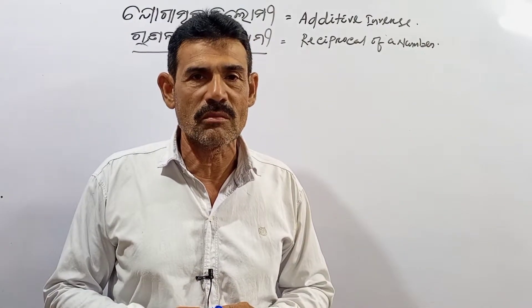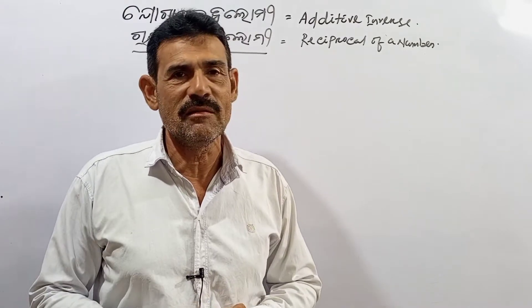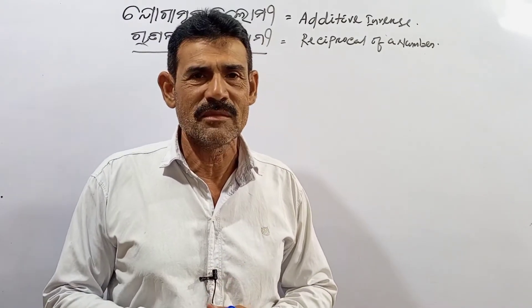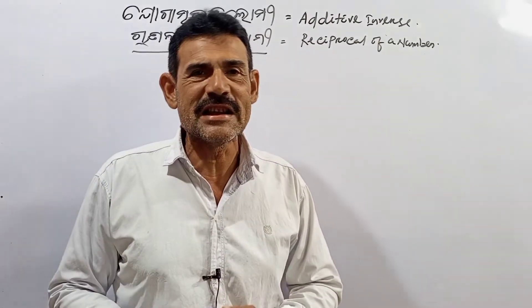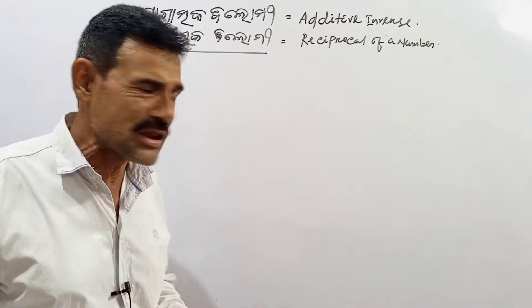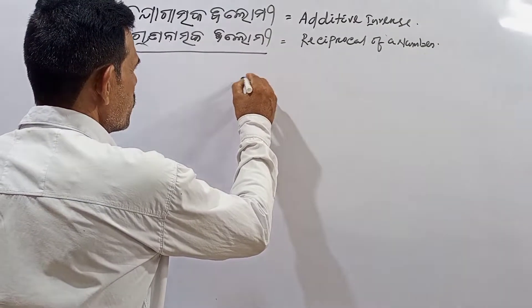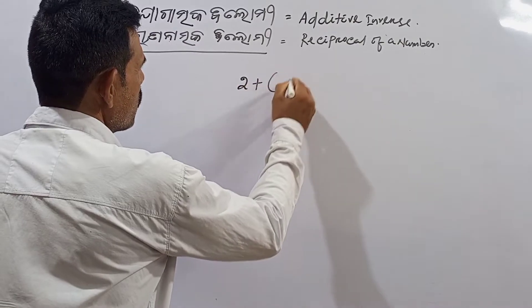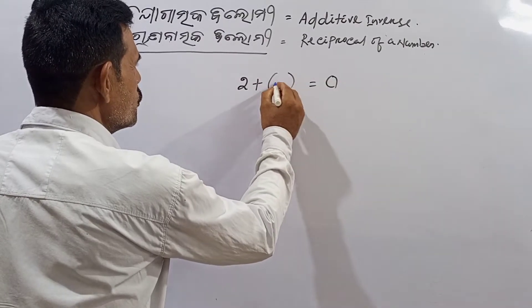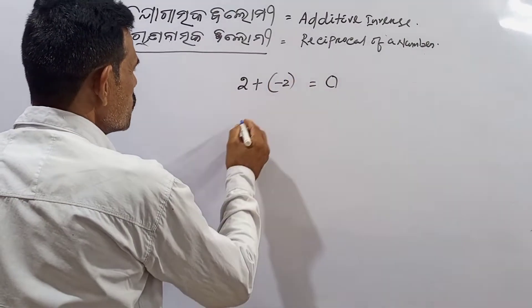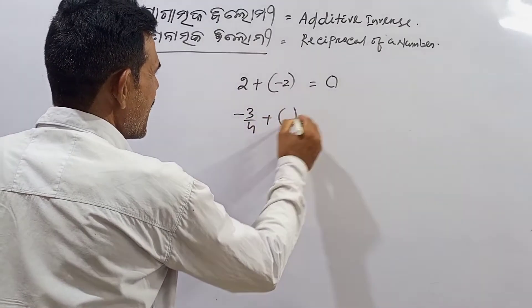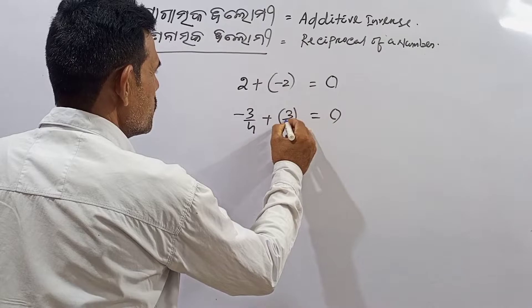When I am going to do additive inverse, I am going to show you with examples. When I am going to do 2 plus negative 2, it equals 0. When I am going to do negative 3 by 4 plus 3 by 4, it equals 0.